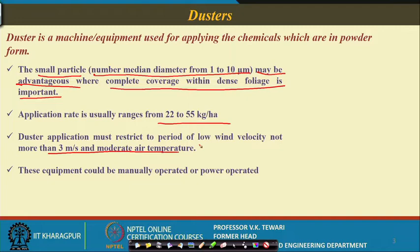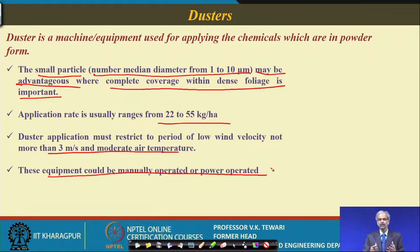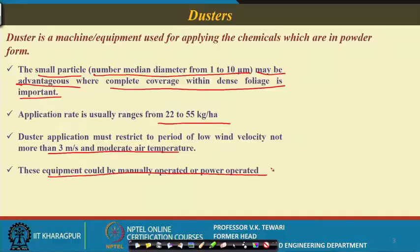These equipment are either manually operated or power operated. You can have manually or power operated ones depending on what you are handling. As said, the capacity is 22 to 55 kg per hectare. If it is a large area, you may not want a manually operated one because the man would have to carry about 15 kg, finish, come back, keep filling, and so on. Alternatively, you can have a power-operated equipment which can carry that amount at once and then spread wherever and at whatever height is required.